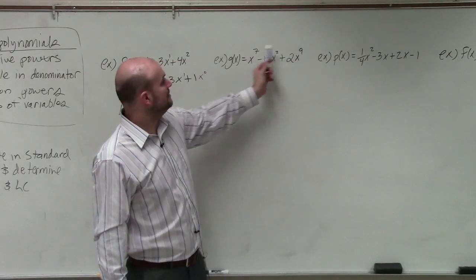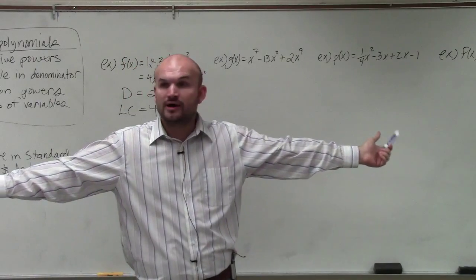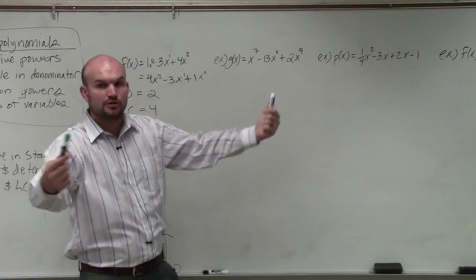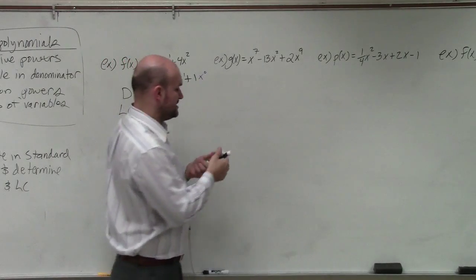So you can see we have 9 as the highest, then we have 7, then we have 2. We don't have 6, 5, 4, 3, or 1, or 0, but that's OK. We don't need to include those. We just need to write it in highest to lowest or descending order.